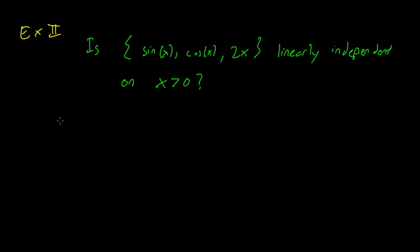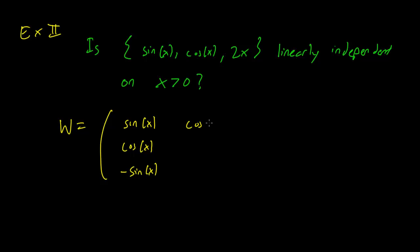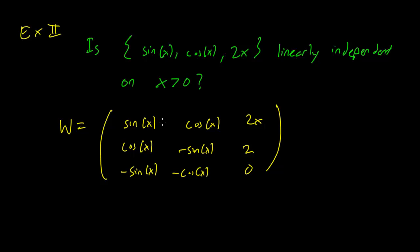So let's write the Wronskian. The Wronskian is going to be: sin x, cos x, 2x in the top row; then cos x, minus sin x, 2; then minus sin x, minus cos x, 0. So I took the three functions in the top row — sin x, cos x, 2x — and took the first derivative, then the second derivative.